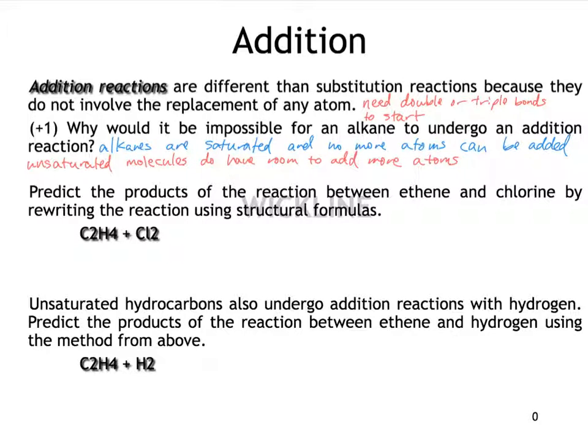And that's because alkanes are saturated, but addition reactions require an unsaturated molecule. So I just wrote alkanes are saturated and no more atoms can be added, but an unsaturated molecule such as an alkene or an alkyne have extra room to add more atoms because they have a double bond or a triple bond, which is going to be extra space for atoms. So let's put this into practice. Let's use this alkene, which is ethene, and react it with this chlorine to show that addition is possible.